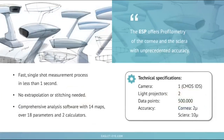This gives us a fast, single-shot measurement process that occurs in less than a second. We don't extrapolate the data and we don't stitch data together — it's real data. Included in the ESP is comprehensive analysis software with over 14 maps comprising 18 different parameters and two lens calculators. It's accurate on the cornea to 2 microns and the sclera to 10 microns, giving us unprecedented accuracy of both corneal topography and scleral profilometry.